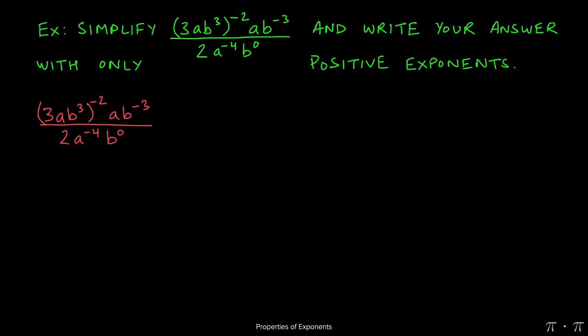In this problem we're asked to simplify the quantity 3ab cubed raised to the negative 2 times ab to the negative 3, all over 2a to the negative 4 times b to the zeroth power. We're asked to simplify this and write our answer with positive exponents.